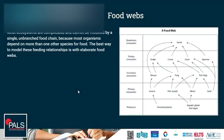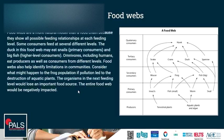Most ecosystems are quite complicated and cannot be modeled by a single unbranched food chain, because most organisms depend on more than one species for food. The best way to model the feeding relationships in an ecosystem is with elaborate food webs. From a food web, we can then pick individual food chains to have a closer look at specific feeding relationships.